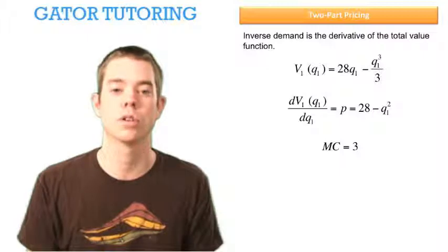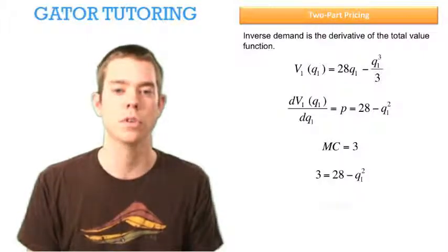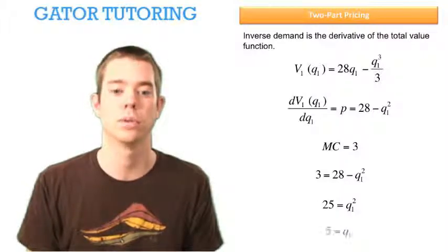We know that marginal cost is $3, so we can set these two lines equal and solve for Q. Doing some algebra, we find that Q is equal to 5.